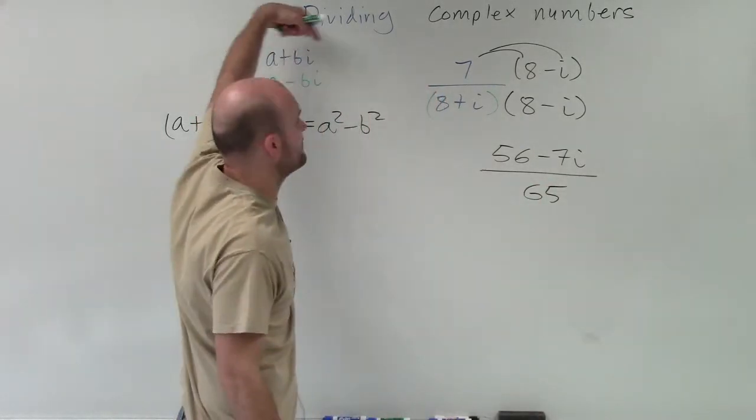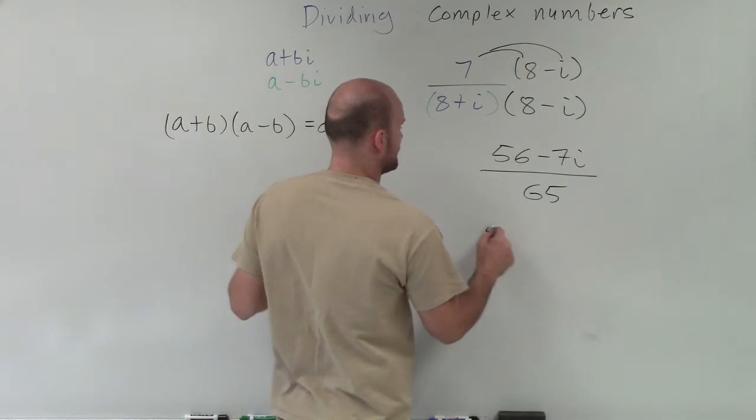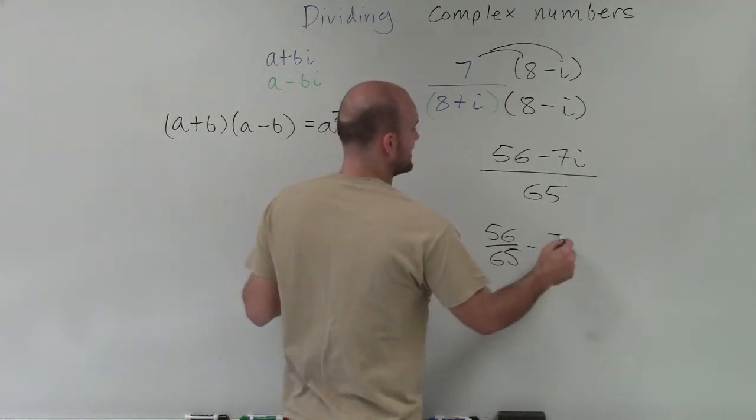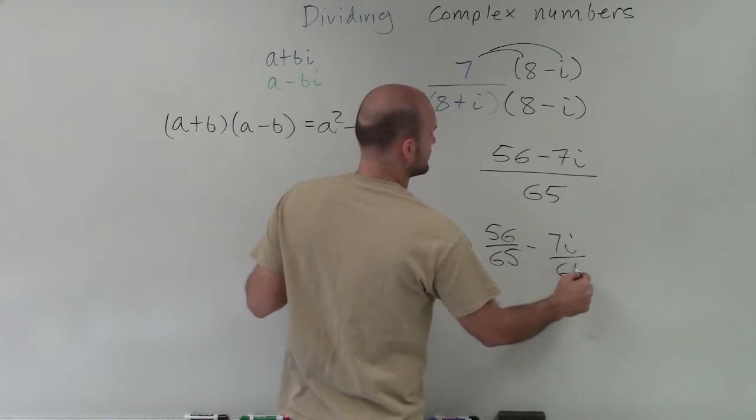Then to write this in the form of a plus bi, I do 56 over 65 minus 7i over 65.